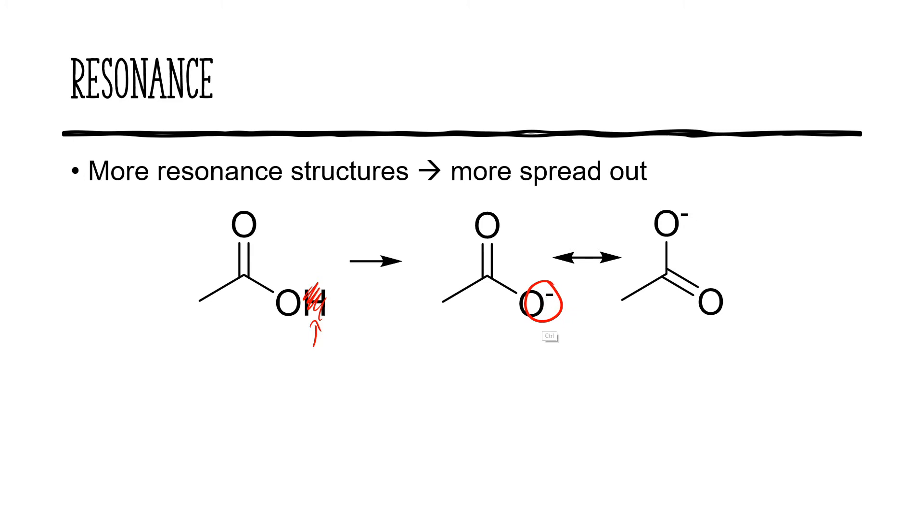However, that's not all. This negative charge can actually move around. We won't get too much into resonance here, but the negative charge is able to go into that bond, kicking up the electrons from the nearby double bond. What that means is that these two oxygens are actually sharing that negative charge. The negative charge has been equally spaced between them. It's spread out between two atoms. Having it spread out between two atoms stabilizes the base, making the acid a stronger acid than it would be without resonance.